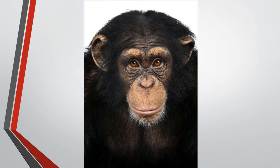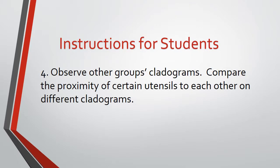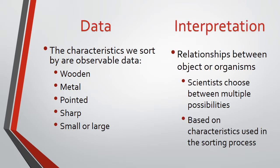That is why some cladograms suggest that our closest relatives are chimpanzees, while others suggest we are most like gorillas, orangutans, or bonobos. Instruct your students to observe each other's cladograms and compare the proximity of certain utensils to each other on different cladograms. Help them discover that the characteristics used in the sorting process determine which utensils end up close together. The characteristics we sort by are observable data, but the suggested relationships between objects or organisms are interpretations of that data. Any cladogram is only one of many possible arrangements. Sorting by different characteristics will produce a different arrangement of organisms.